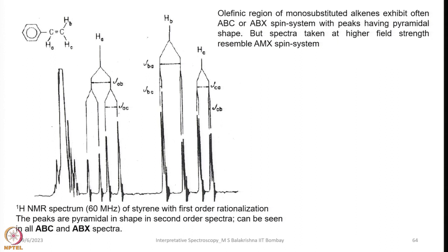One such example is shown here in the olefinic region of styrene. The interaction of H_A is not the same as the interaction of H_B and H_C; as a result, we come across one cis coupling, one trans coupling, and also coupling between B and C. Here it is a typical ABC type spin system, and the advantage with higher field is the chemical shifts move farther away. If you increase the magnetic field, the complicated second order spectrum becomes a simplified first order spectrum — that is the advantage of recording NMR at much higher field.